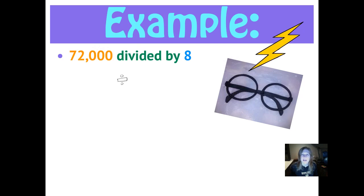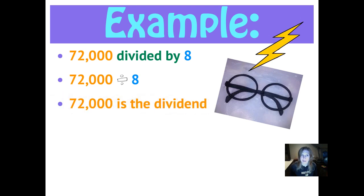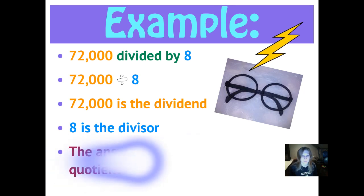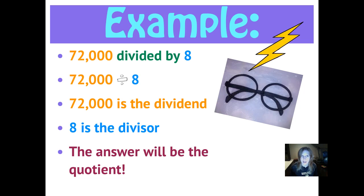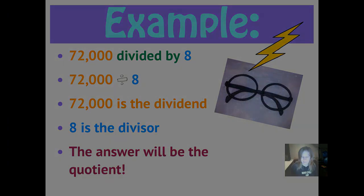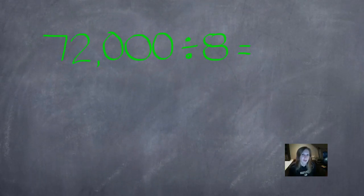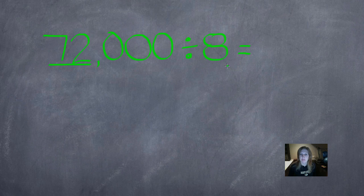Here's an example: 72,000 divided by 8. Here's how it would look written as an expression: 72,000 divided by 8. 72,000 is the dividend — that's the big number that we're starting out with. 8 is the divisor — that's the number we're dividing by. The answer that we get will be our quotient. We just don't know what that is yet. This is pretty similar to the strategies we used when we were using mental math to multiply. We underline our non-zero digits. 72 is the only digits in here that are not zeros, and 8 is a non-zero digit. Then we just divide those two numbers: 72 divided by 8 is 9, because 9 times 8 is 72.